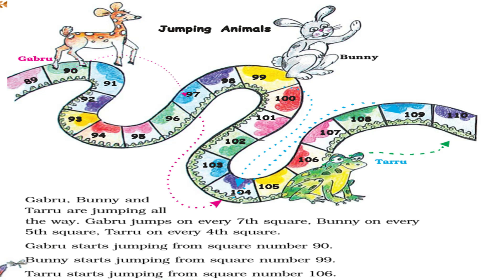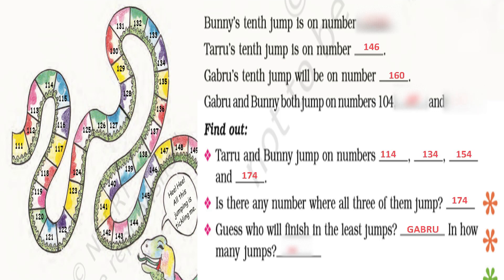Jumping animals: Gabru, Banni, and Tharu are jumping. Gabru jumps on every 7th square starting from 90; Banni jumps on every 5th square starting from 99; Tharu jumps on every 4th square starting from 106. Banni's 10th jump is on number 144. Gabru's 10th jump is on number 160. Gabru and Banni both jump on numbers 104, 109, and 134.